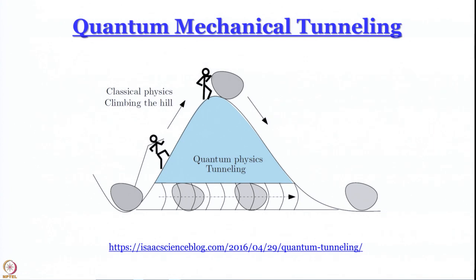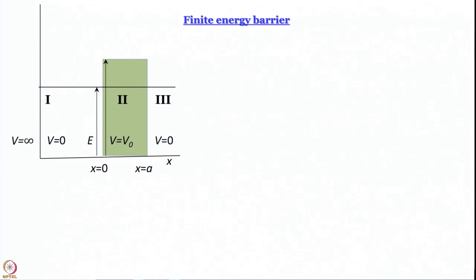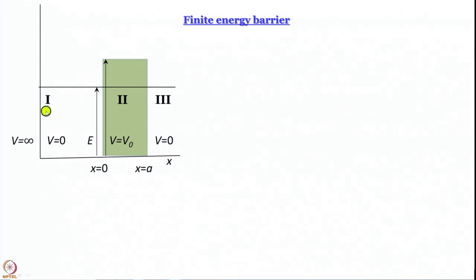This phenomenon is called quantum mechanical tunneling, and it happens when we have a potential barrier which is finite and not infinite. Let us understand the system we are going to discuss. We have the same particle in a box starting from the left, with an infinite potential on the left. One can also study what happens when this left potential is not infinite — I encourage you to do that as self-study.